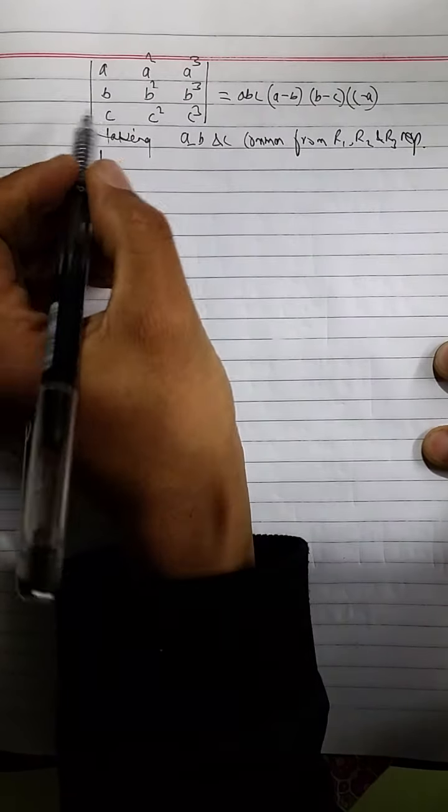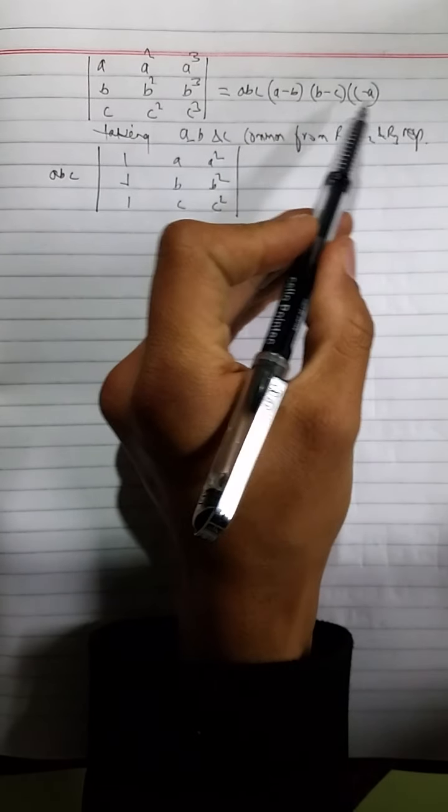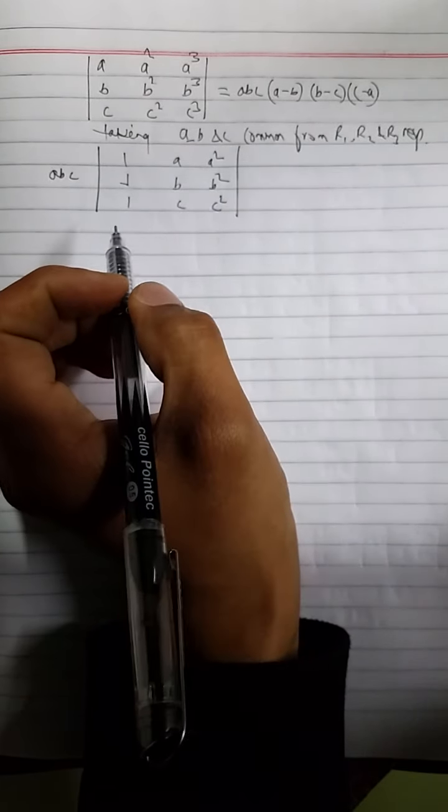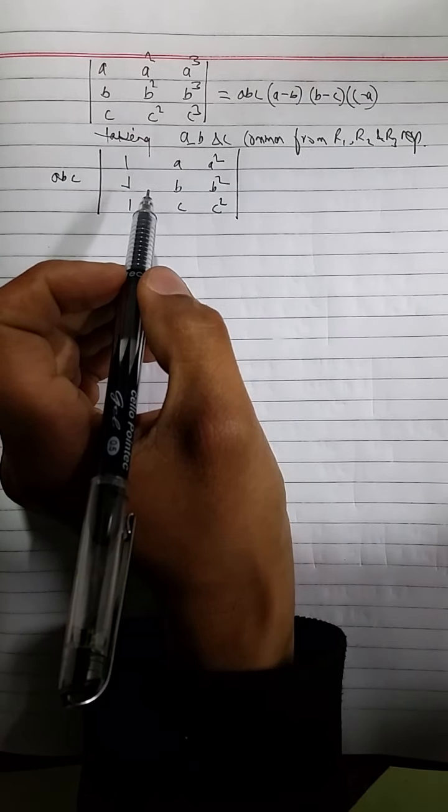Now in the proving part, we have to obtain the factors A minus B, B minus C and C minus A. For this, we have to do some iteration.